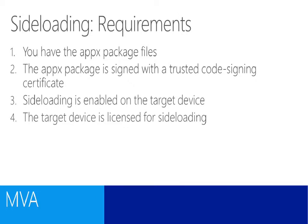There are some requirements that are in place for sideloading an application. The first is obvious — you have to have access to the installation files, the appx package files for the application. Secondly, the appx file has to be signed by a trusted code signing certificate, meaning that certificate has to be trusted by the device to which you are deploying. Third, sideloading needs to be enabled on the target device via a registry setting, configurable through group policy. Finally, there's a licensing requirement — the device has to be licensed for sideloading, either via a sideloading product key or because it's a Windows 8 Enterprise device where sideloading is already licensed.